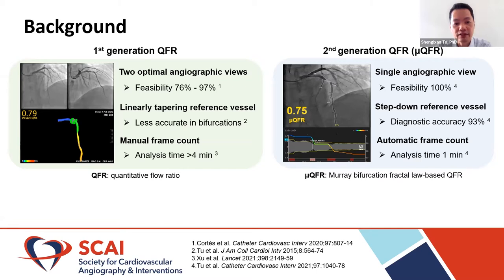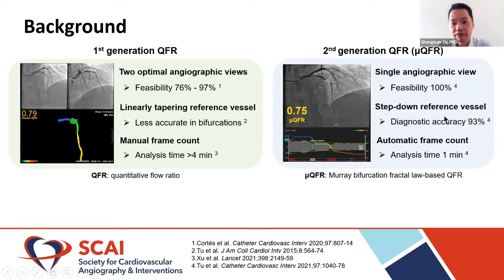The previous study shows that the analysis time of the first-generation QFR takes at least four minutes. We developed the second-generation QFR — we call it new QFR. The new QFR allows calculation from a single angiogram view with high feasibility. It also includes side branch reconstruction, allowing calculation of the reference vessel using a step-down phenomenon, which increases diagnostic accuracy, especially in bifurcation lesions. Artificial intelligence has been applied to the QFR calculation, which improves efficiency and reduces analysis time to less than one minute.